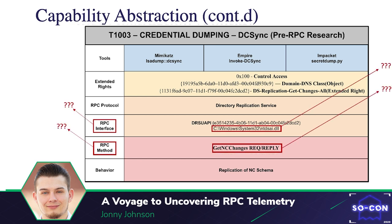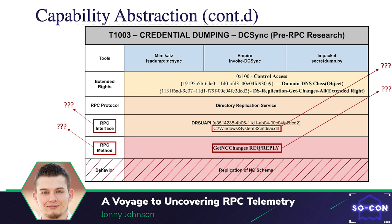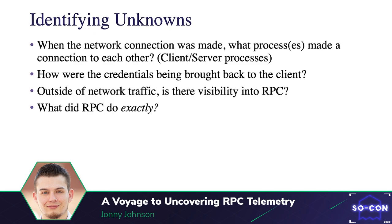There have been a lot of great blogs and talks on DC Sync, but I felt there were things just glossed over that I didn't understand. When going through this abstraction map, there were specific things I didn't understand: an RPC protocol made sense as a service, but an RPC interface — I wasn't sure what that meant. I like to think one-to-one, so how did an RPC interface, DRSU API, and that GUID relate? And how did the DLL come into play?